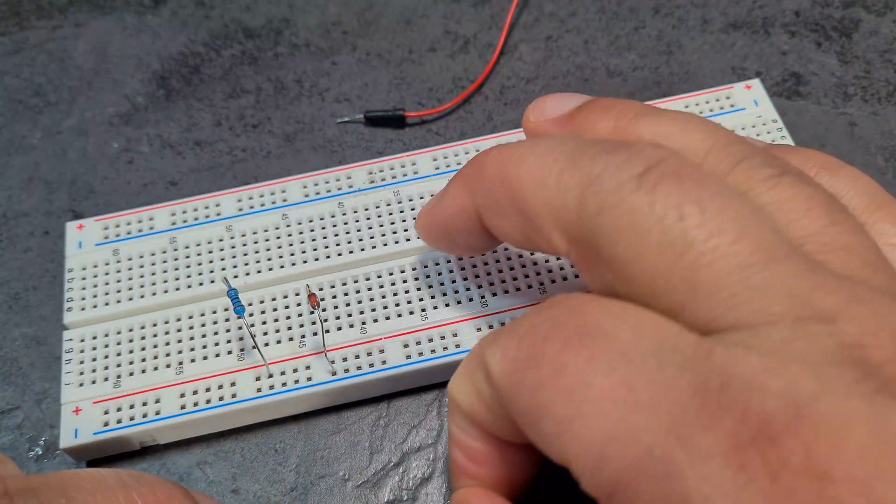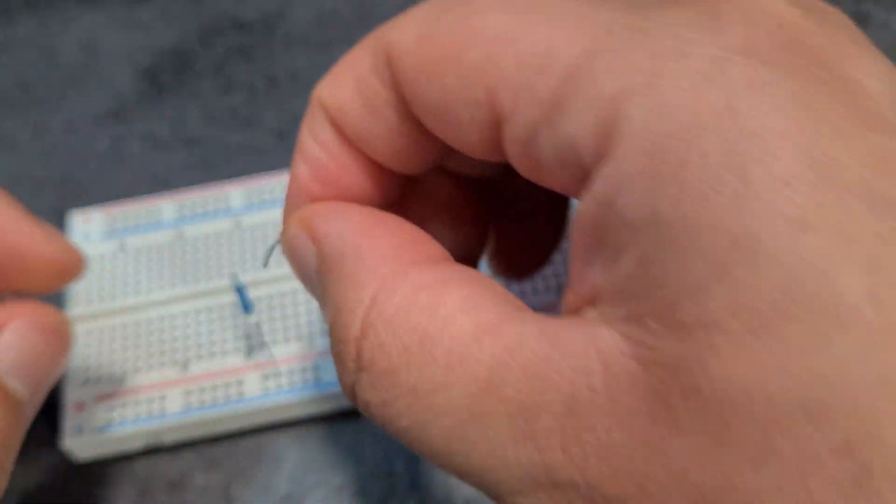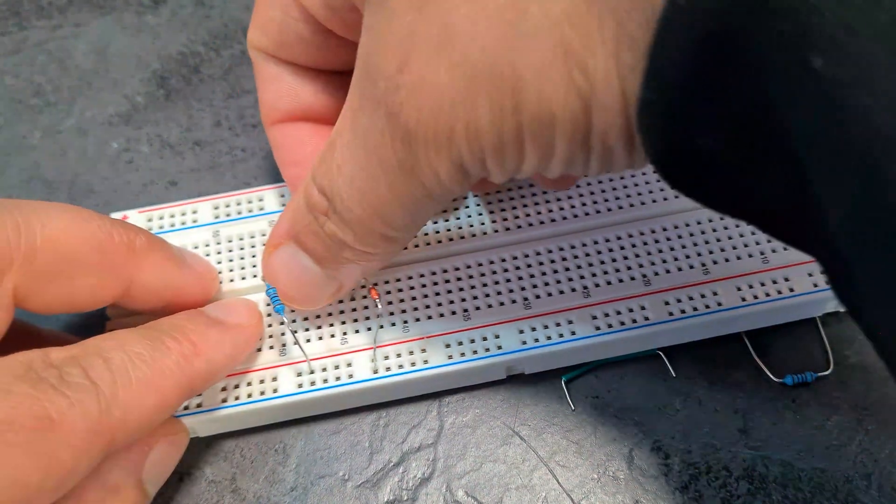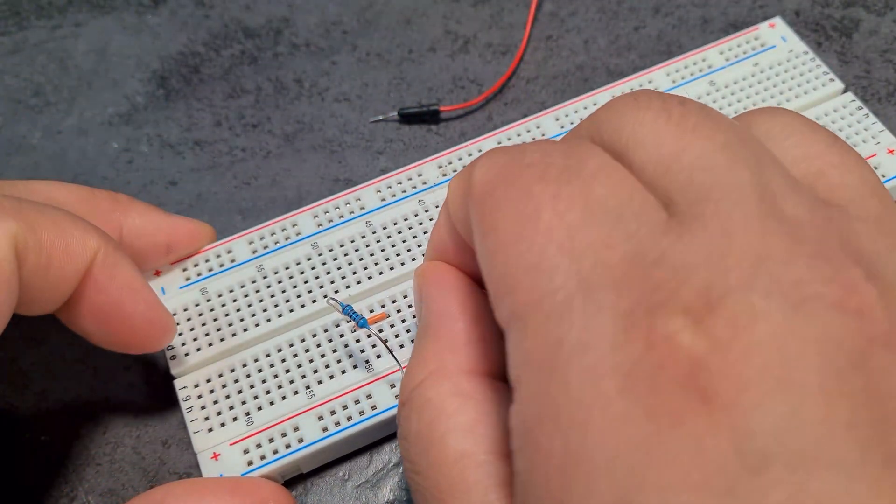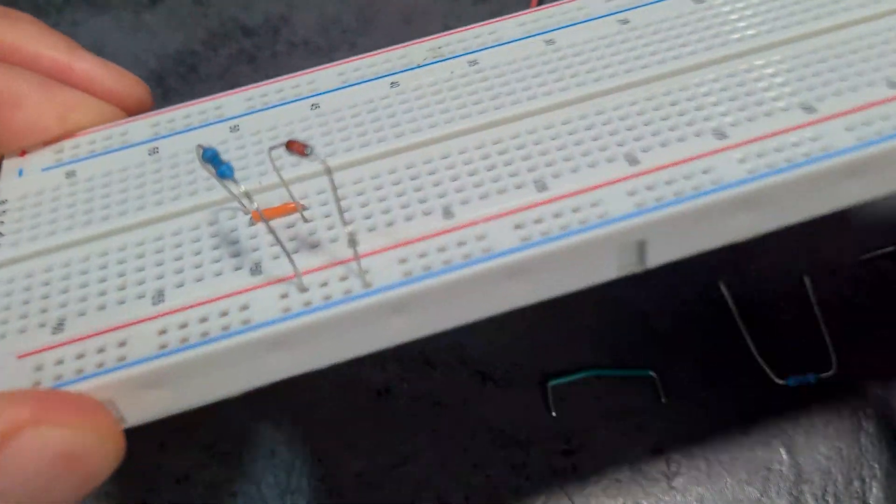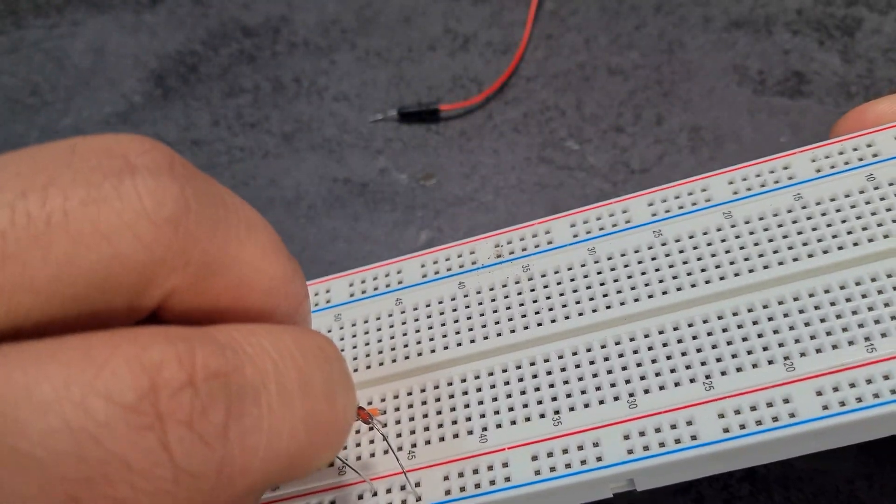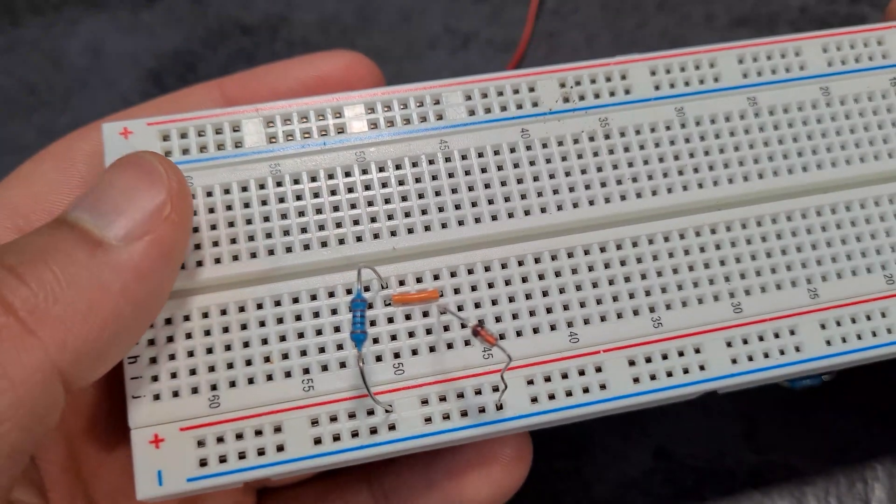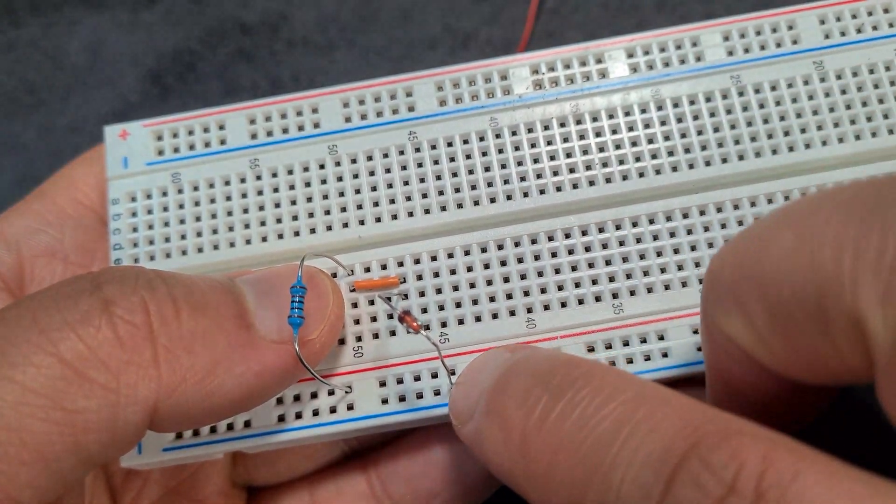And now we need to connect these. I actually need to move the Zener diode up which I will do. So if I take this small jumper wire that I've got and put it in right next to the resistor like so, then I can just take the diode and move it up like so. So now I've got the resistor, then jumper wire to the diode, and the diode's going to ground.